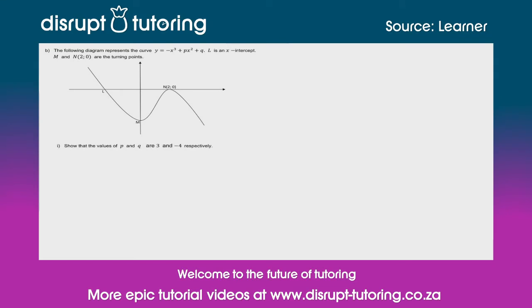Today we're going to deal with a cubic function question, and this one was sent in by Lungkile. So they've said to us the following diagram represents the curve y equals minus x cubed plus px squared plus q. They've also said to us that L is an x-intercept, and they've also said to us that m and n are turning points, which you can clearly see.